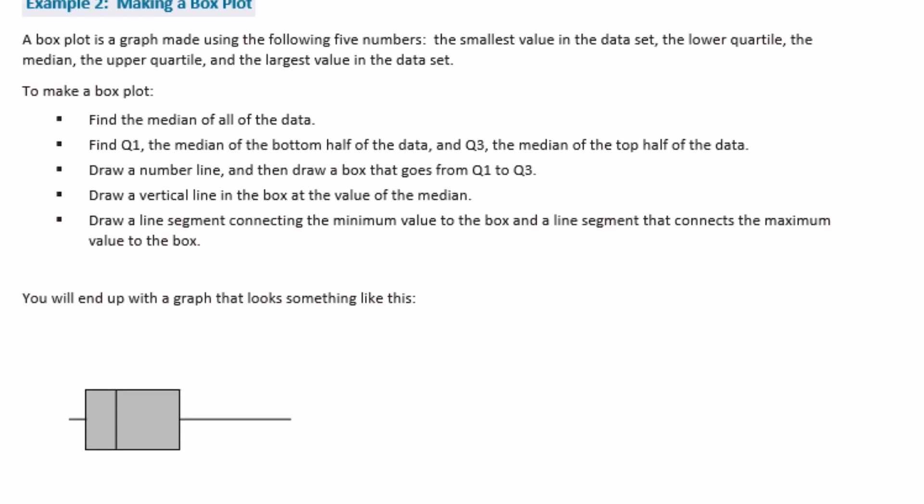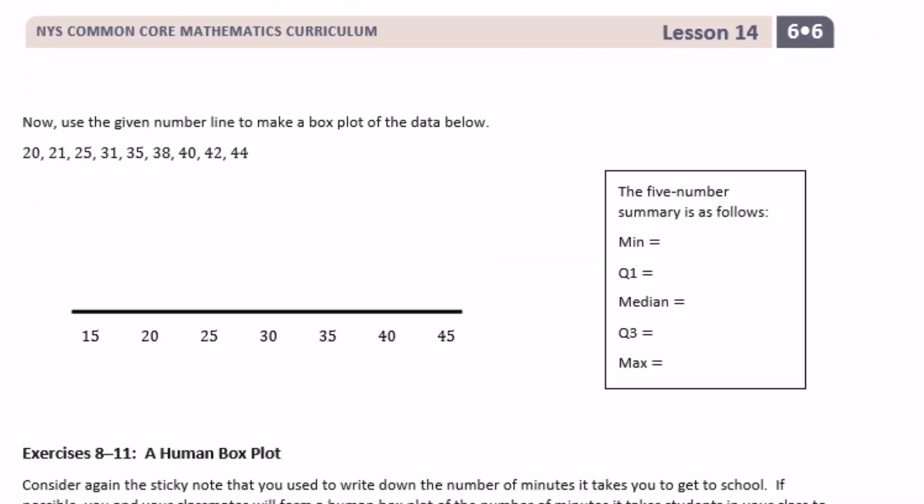So to make a box plot, we find the median. We know how to do that. We find Q1 and Q3. We know how to do that. We draw the number line and draw a box plot that goes from Q1 to Q3. So that's what this box is. Going from Q1 right here to Q3 right here. Median right there. This is the minimum. This is the maximum. So that's how you end up with that graph. Then you draw a line segment connecting the minimum value to the box and the maximum value to the box. That is your box plot.